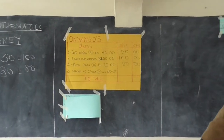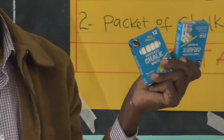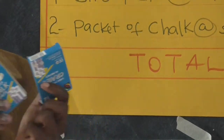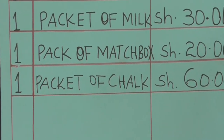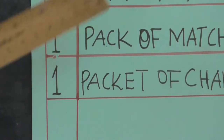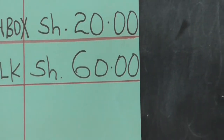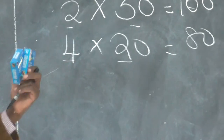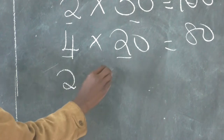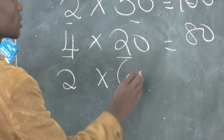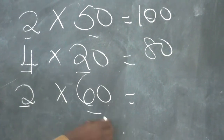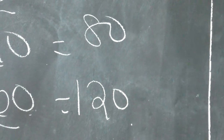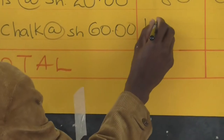Lastly, I bought two packets of chalk. To pay for these, I check the price list — one packet of chalk costs 60 shillings, but we need two packets. So I take two packets multiplied by 60 shillings. Two multiplied by 60 gives 120. So for the two packets of chalk I will pay 120 shillings.